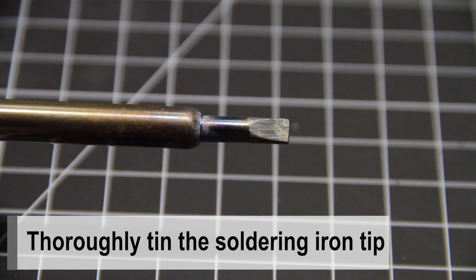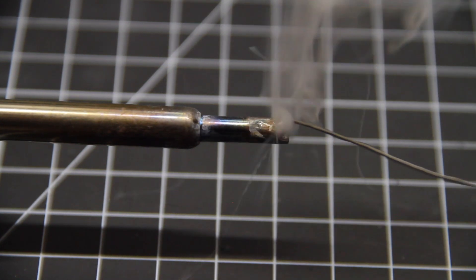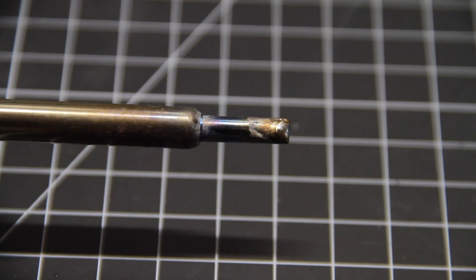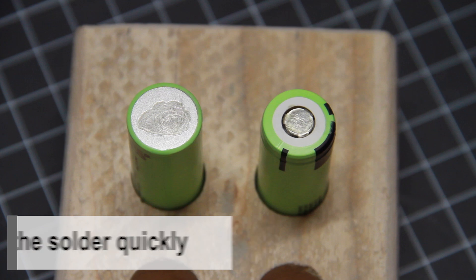Thoroughly tin the soldering iron tip. Apply the solder quickly. If you linger too long, you may damage the cells.